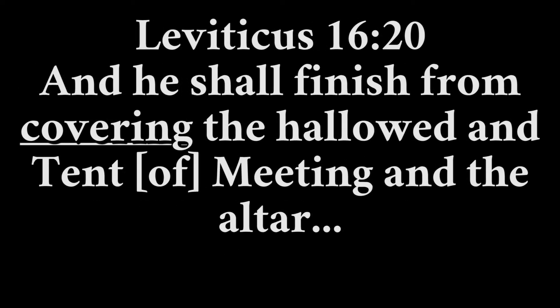Leviticus 16:20 — 'And he shall finish from covering the hallowed, and tent of meeting, and the altar.' This is from the passage about the Day of Atonement ritual. Aaron the high priest is finishing from covering the hallowed, the holy things, and the tent of meeting, and the altar. He is atoning for them, or covering them. Does that mean they are all becoming at one? Is Aaron becoming a unity with the hallowed, the tent of meeting, and the altar? Or are the hallowed things, the tent of meeting, and the altar all becoming one thing? No, they're not. They are being covered over.